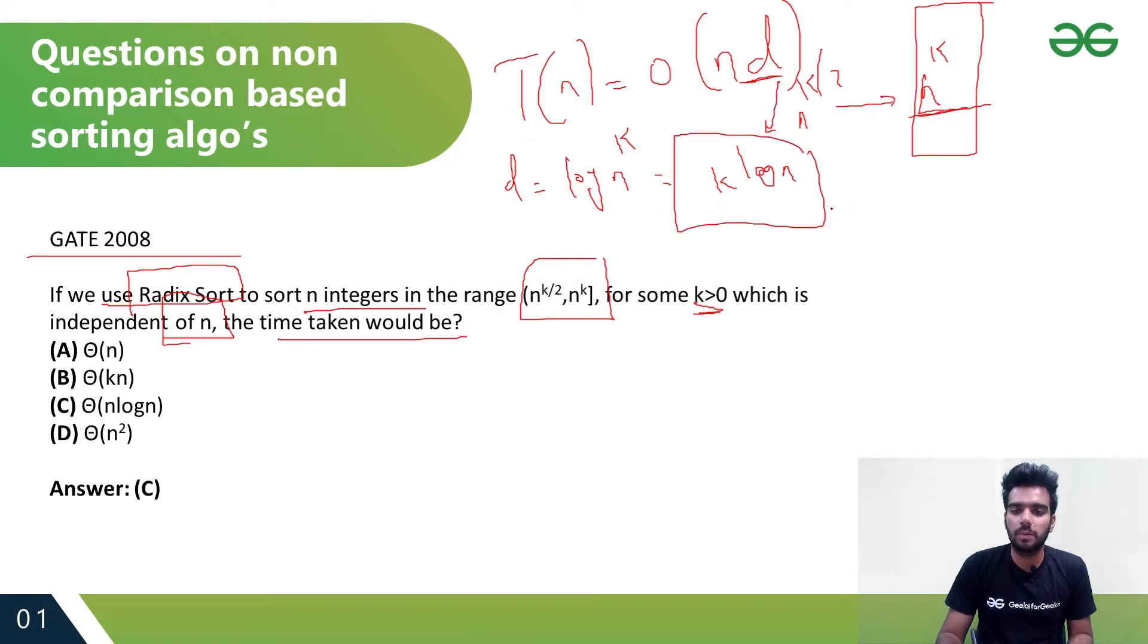The total time complexity is n*d, which is n*k*log(n). Since k is a constant independent of n, we can treat it as a constant, giving us O(n*log n). So C is the right option.